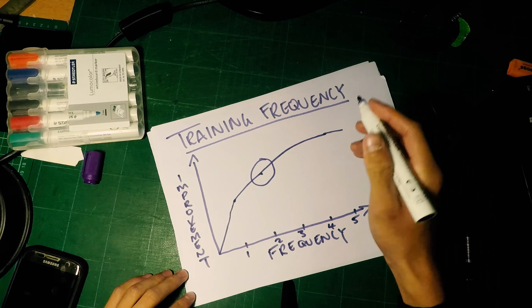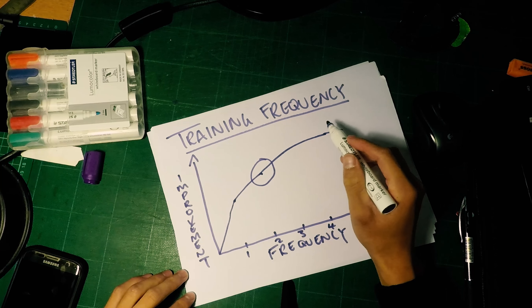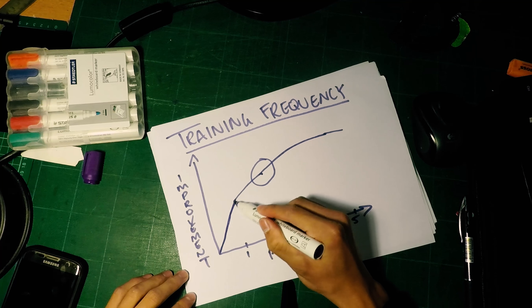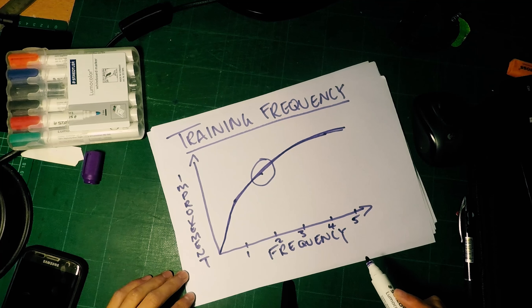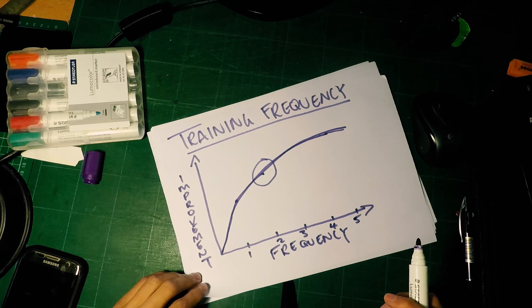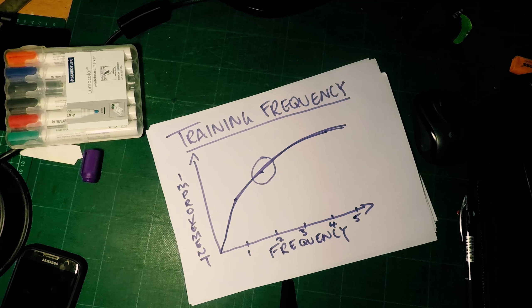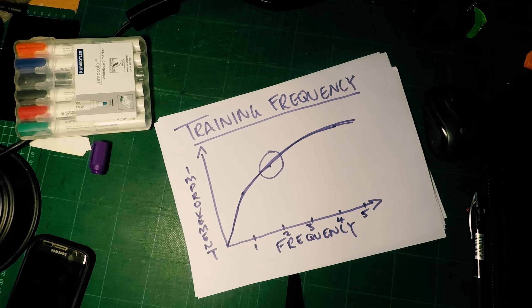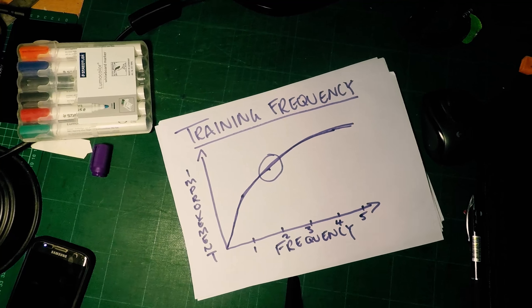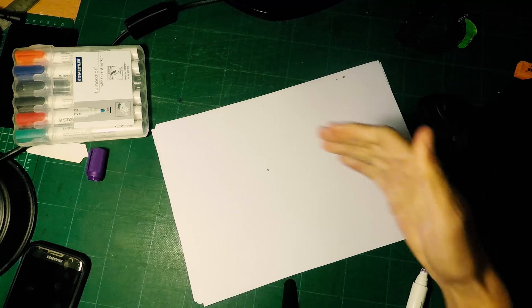Obviously this graph is not scientifically evident—it's just what I think. But my opinion is twice is the sweet spot, especially if you're doing all this other stuff every week. The difference between two and three times—because we're not going to be powerlifters, we're not going to be bodybuilders—it's not really going to matter too much.